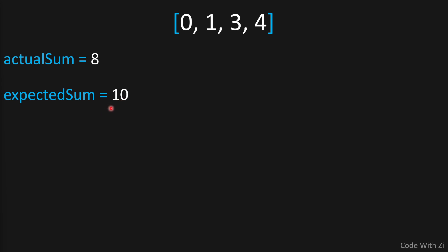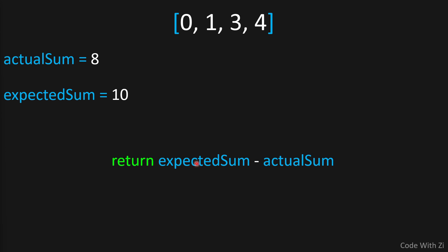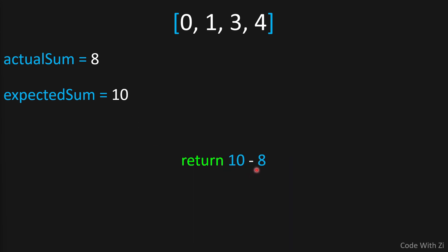After that, we simply return expected sum minus actual sum. Expected sum is 10, actual sum is 8, so 10 minus 8 equals 2. And if we check, the number that's missing is indeed 2. The only thing we need to do is add the numbers together and check the difference between what it is now and what it should be, then return that missing number.